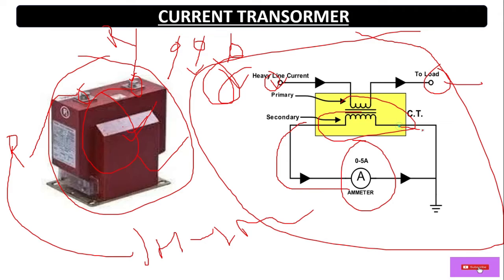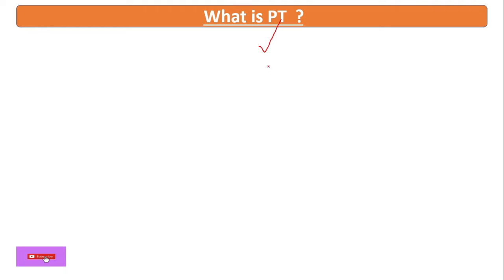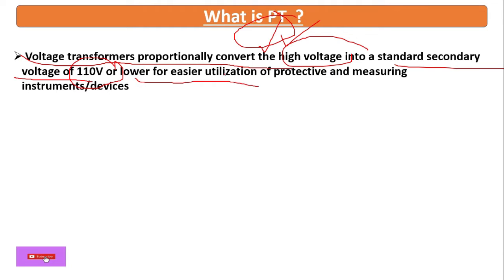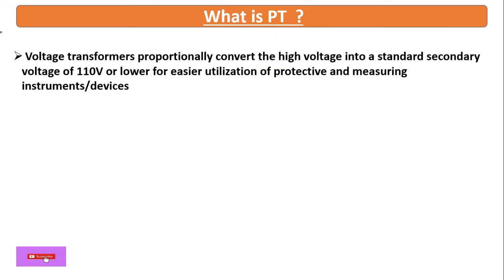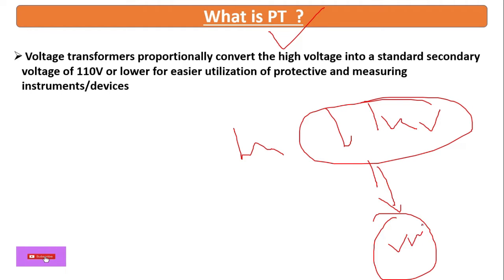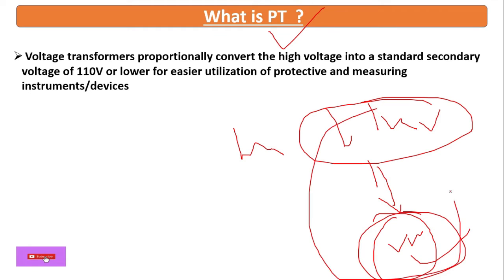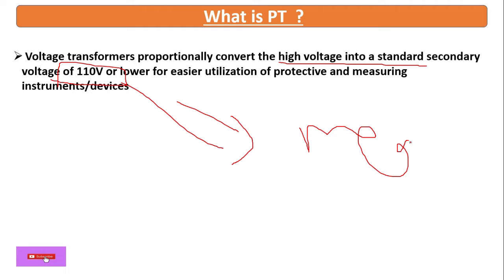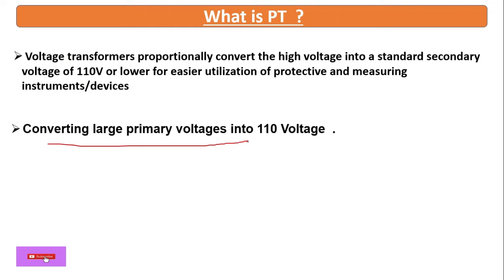Now, PT stands for Potential Transformer. It is used to measure voltage. A voltage transformer professionally converts high voltage into a standard secondary voltage of 110 volts for easier utilization with protecting and measuring instrument devices. This is used to convert the high voltage side — if you want to measure a high voltage like 11 kV and connect it directly to a voltmeter, it will burn. That's why we use a PT to convert high voltage into 110 volts.